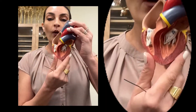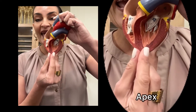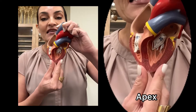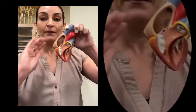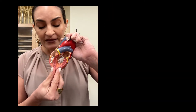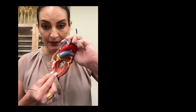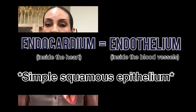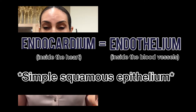The ventricles contract from bottom up, from the apex of the heart — this is the apex because it is the pointy part of the heart. Here on the top part, you have the base of the heart. These atrioventricular valves will have to remain closed, and that's not an easy task because these valves are basically flaps of endocardium. Endocardium is a single layer of squamous cells, so they are very flexible.